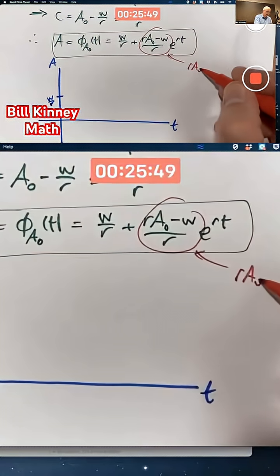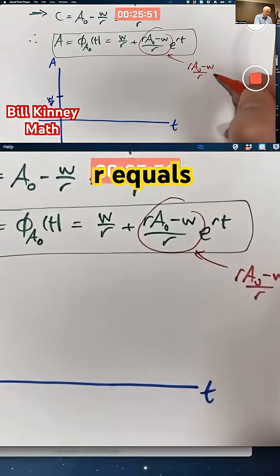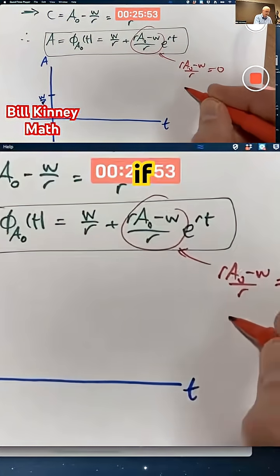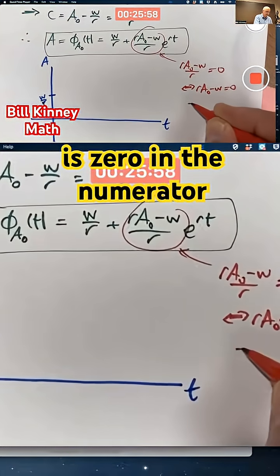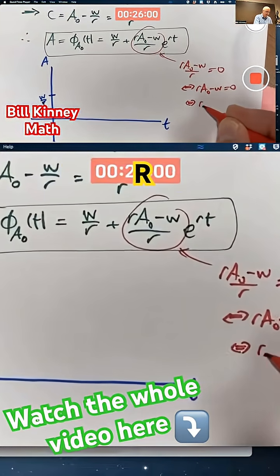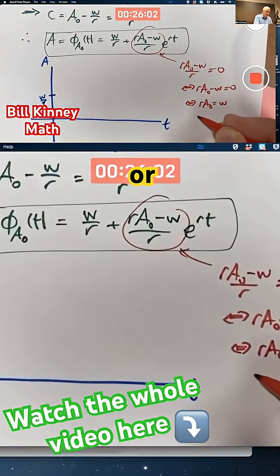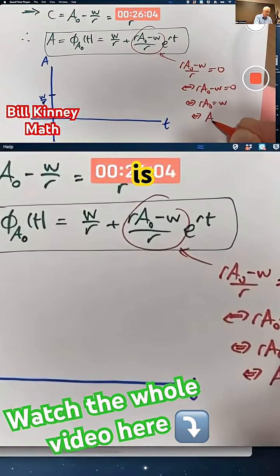r a naught minus w over r equals zero if and only if r a naught minus w is zero, the numerator, if and only if r a naught equals w, or if you prefer, a naught is w over r.